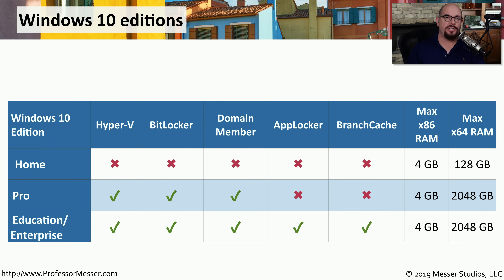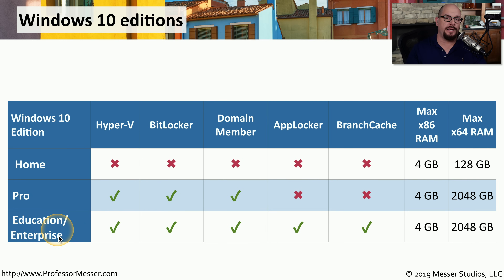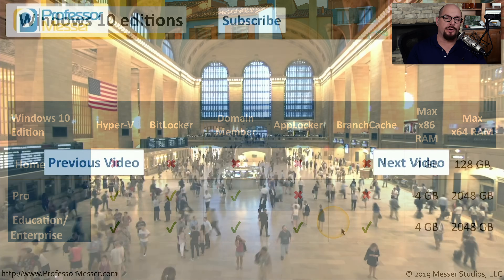The 32-bit editions of Windows 10 all max out at 4 gigabytes of memory. For the Home edition, the maximum memory is 128 gigabytes, and for the other editions it goes up to 2,048 gigabytes. Windows 10 Home does not include the more advanced OS features. Windows 10 Pro adds Hyper-V virtualization, BitLocker full disk encryption, and the ability to connect to a Windows Active Directory domain. The Education and Enterprise editions include all of Windows Pro's capabilities plus more advanced features such as AppLocker and BranchCache.